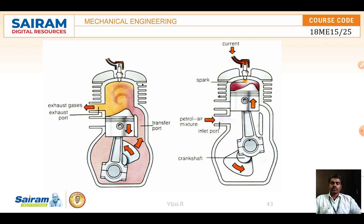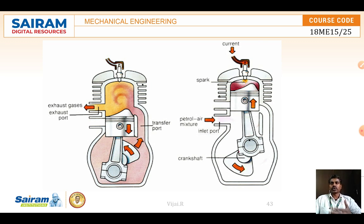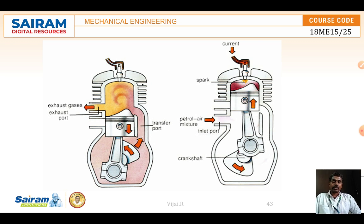In a two-stroke engine, the ports are opened and closed by the movement of the piston itself, not by valves. The entire cycle is completed within two strokes: the upward stroke and the downward stroke. The upward stroke is when the piston moves from the Bottom Dead Center (BDC) to the Top Dead Center (TDC), and the downward stroke is when the piston moves from TDC back to BDC.